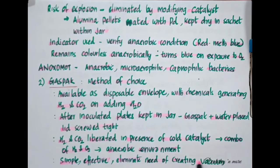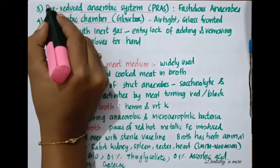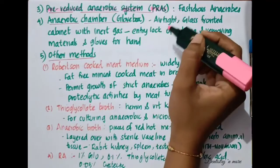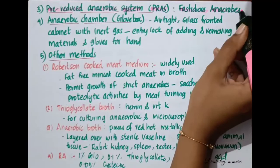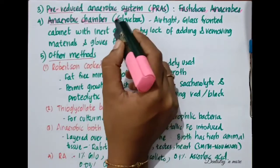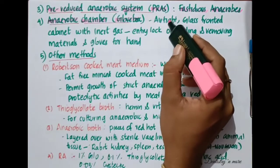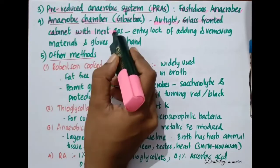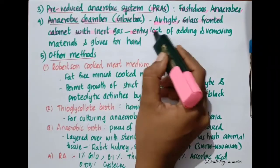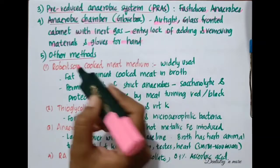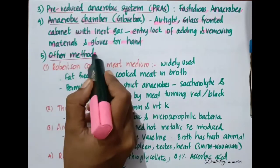The next method is the pre-reduced anaerobic system (PRAS), used for fastidious anaerobes. Another method is the anaerobic chamber or glove box, which has an airtight glass-fronted cabinet with inert gas, an entry lock for adding and removing materials, and gloves for handling.